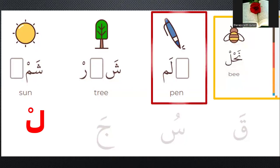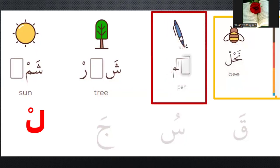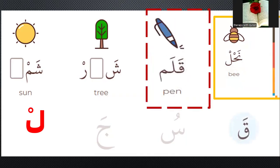Number two: which letter is at the beginning? What can you see? It's a ban — in Arabic, kalam. Which letter is correct? Yes, qa — kalam.